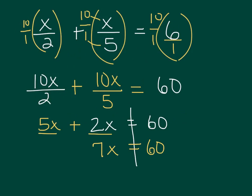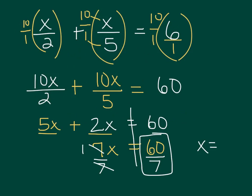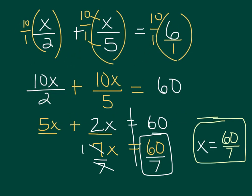I have one last step — you guys should know this. I'm going to divide by 7 on both sides. 7 divided by 7 is 1, so I just have 1x. Over here, 60 divided by 7 — well, 7 doesn't go into 60 evenly, so I can just leave my answer like that. My answer is x equals 60 over 7. There's my solution to that equation.